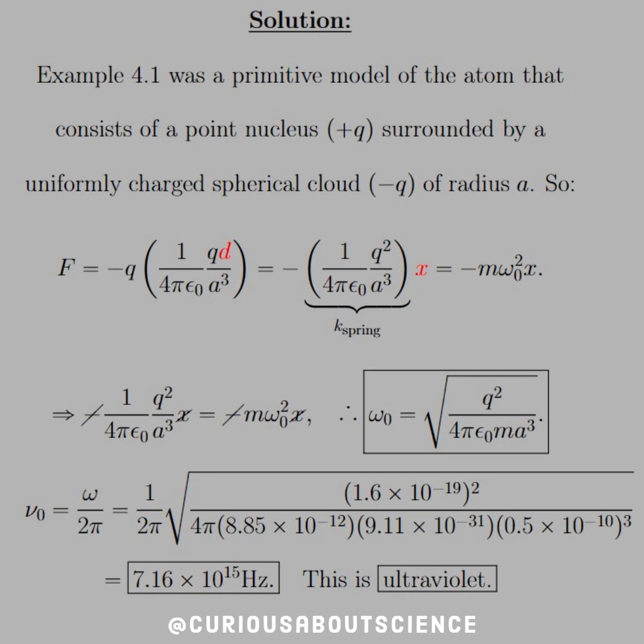Let's recall first that the example 4.1 was a primitive model of the atom that consisted of a point nucleus plus Q surrounded by a uniformly charged spherical cloud, negative Q of radius A.